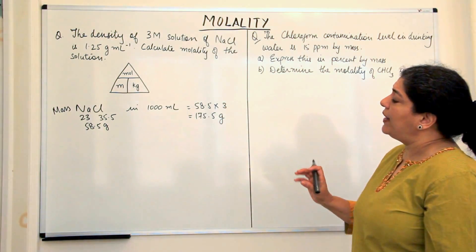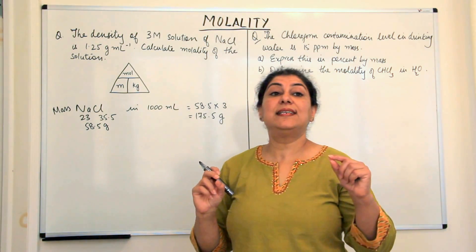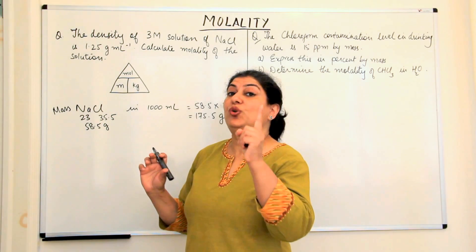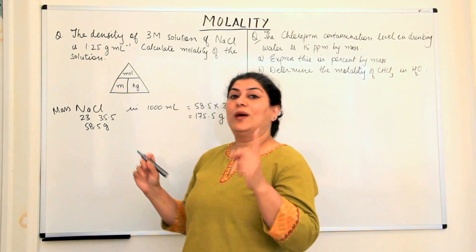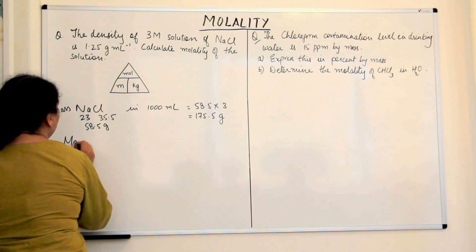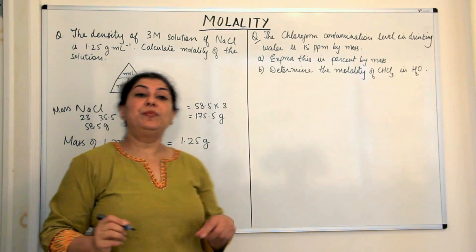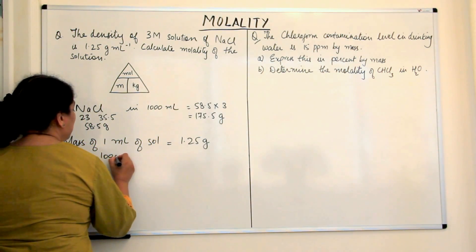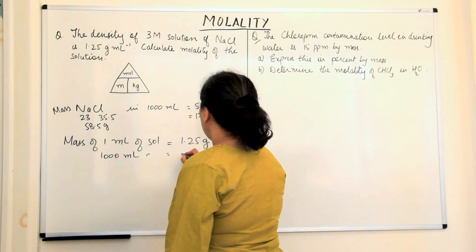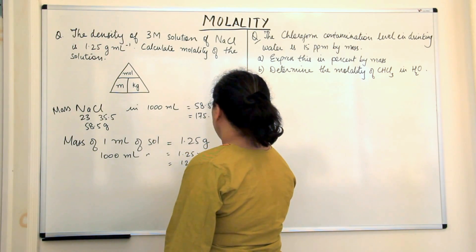Now our next step is to find the kilograms of solvent. We've been given the density of the solution — density is mass per unit volume. One milliliter of solution has a mass of 1.25 grams. So the mass of 1000 milliliters of solution would be 1.25 × 1000 = 1250 grams.